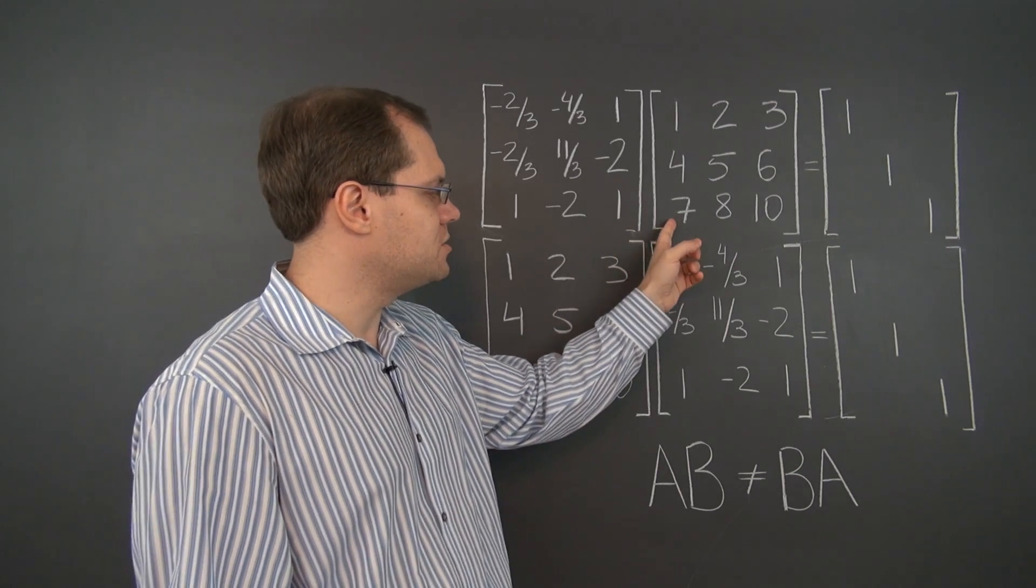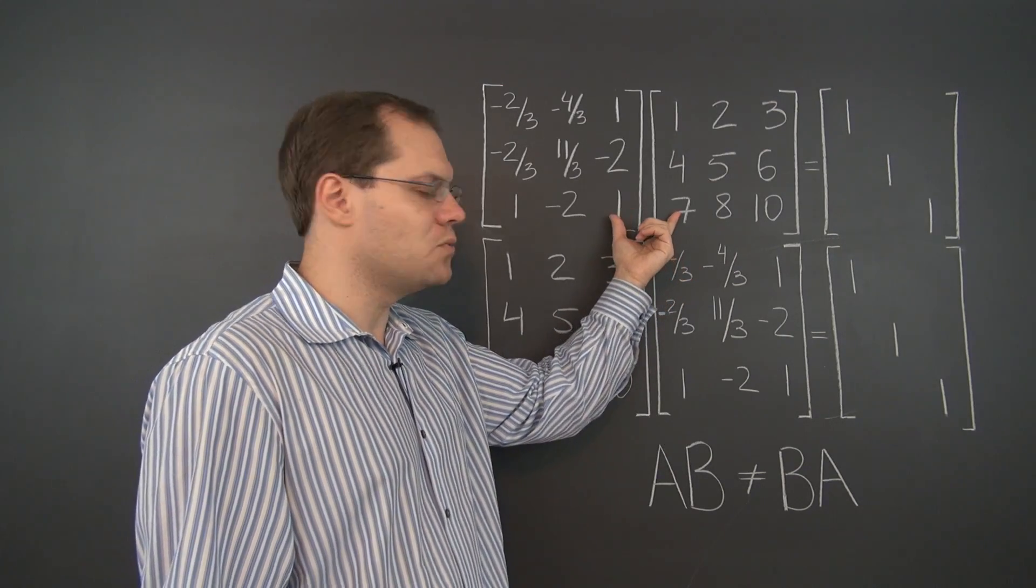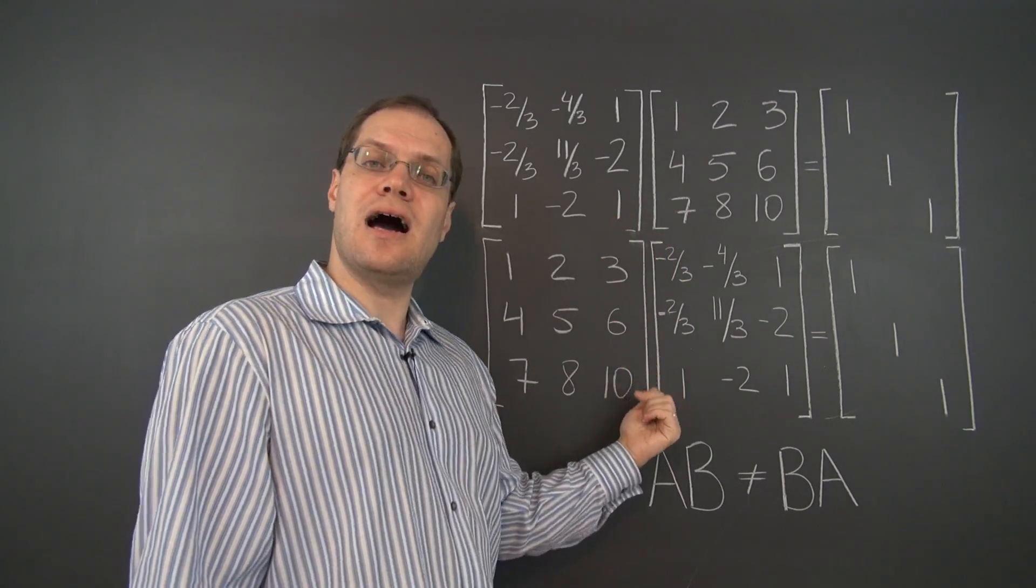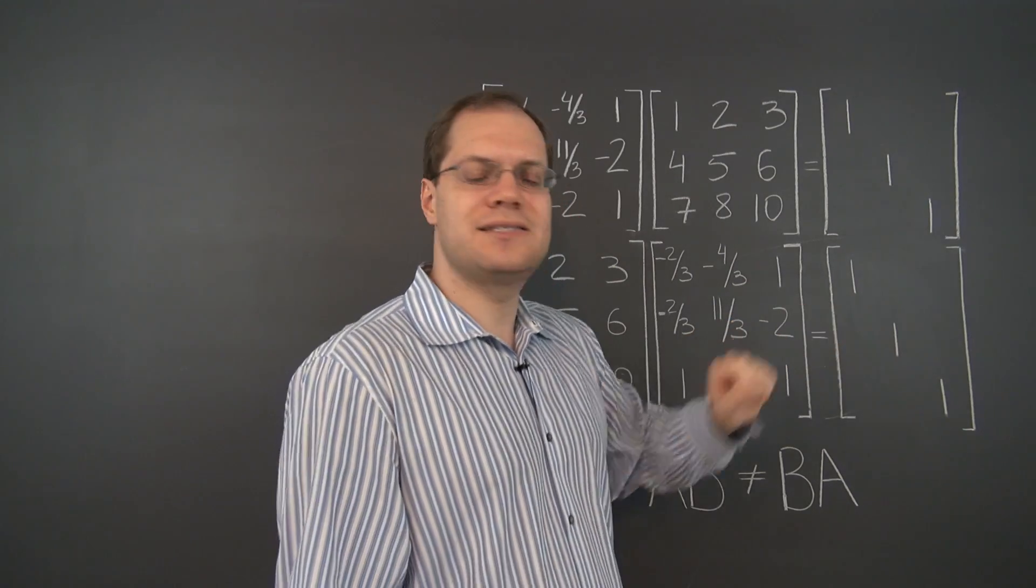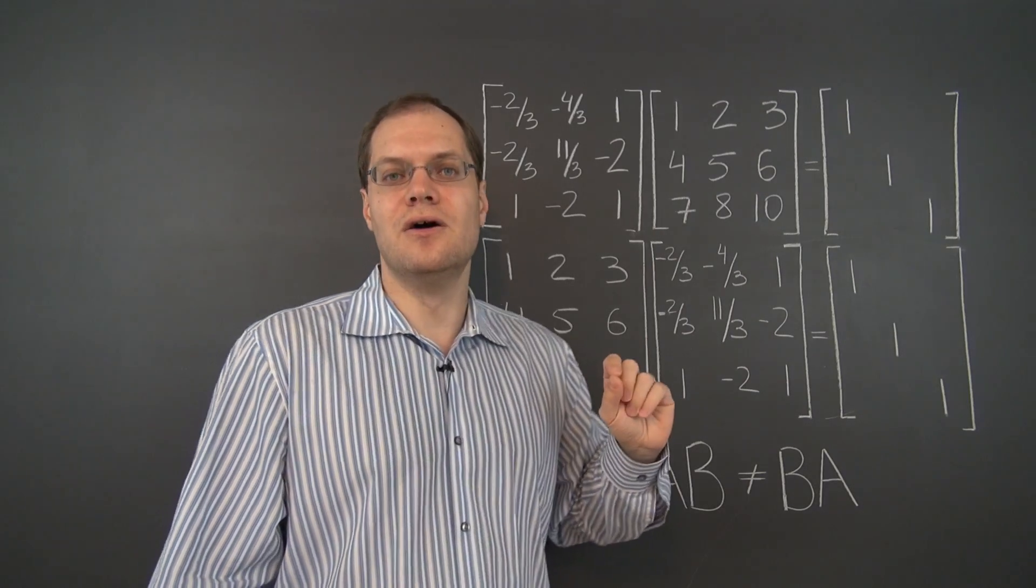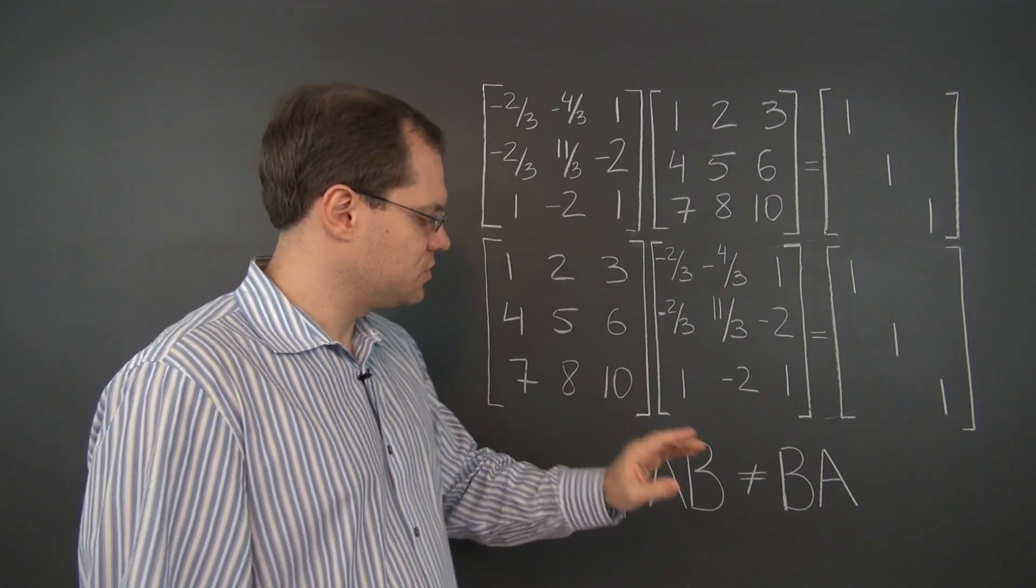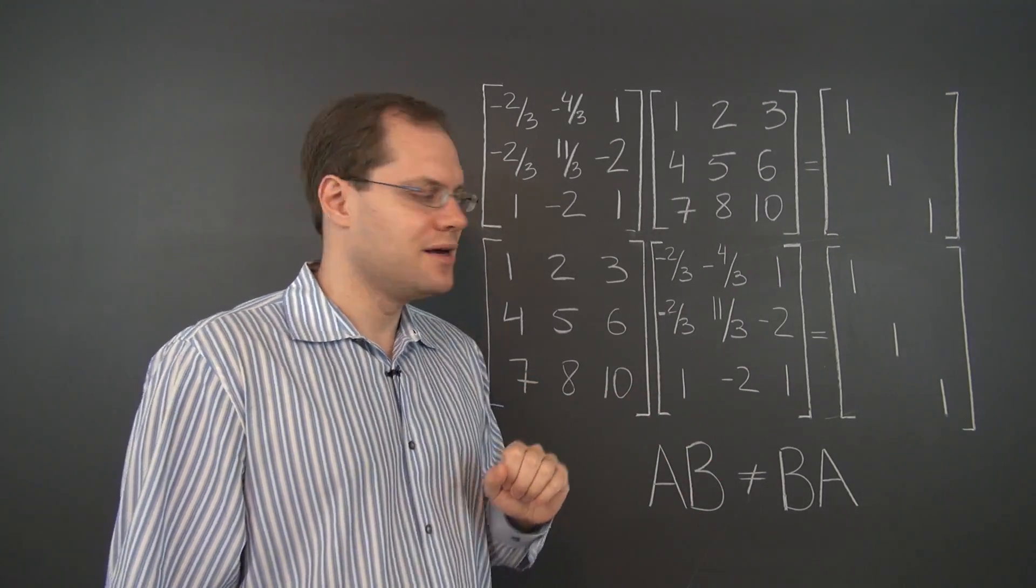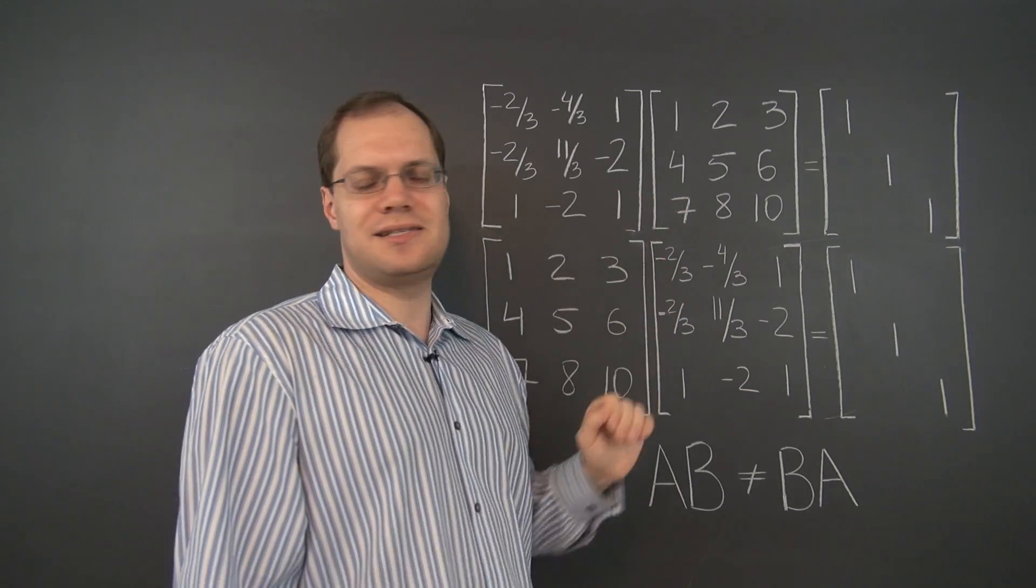Now here we have two matrices and we're multiplying them in one order first and then in the opposite order, and we're getting the same result. So it's surprising. Now we've already seen one exception to this, to the non-commutativity rule, and that's when one of these matrices is the identity.